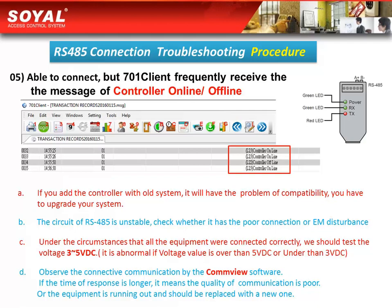Fifth, when the RS485 is able to connect but the 701 client frequently receives messages of 'controller online' or 'controller offline' — it sometimes shows online, sometimes shows offline — there are four possible reasons. First, if you added the controller with an old system, the system may be too old and have compatibility problems, so you have to upgrade your system.